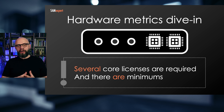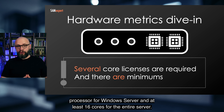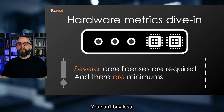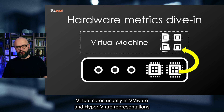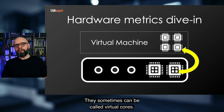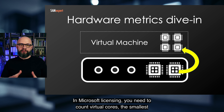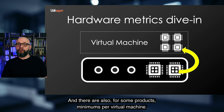There are some minimums in Microsoft licensing. For example, you need at least eight cores per processor for Windows Server, and at least 16 cores for the entire server — you can't buy less, or the server won't be licensed. And when talking about cores, there are also virtual cores. Virtual cores in VMware and Hyper-V are representations of hardware threads, sometimes called virtual CPUs or virtual cores. In Microsoft licensing, you need to count virtual cores — the smallest fraction in the virtual machine — and for some products there are also minimums per virtual machine.